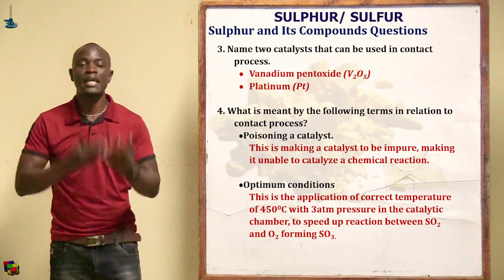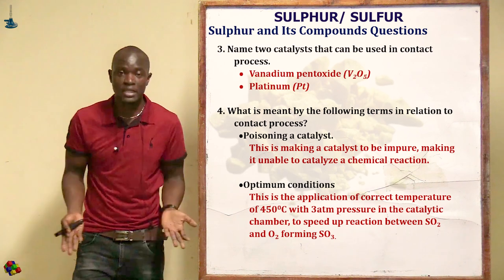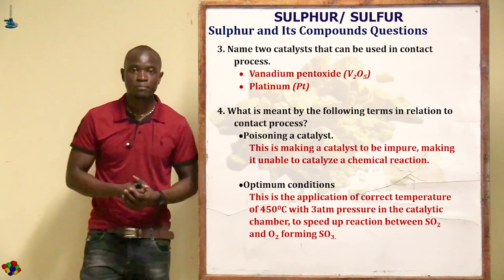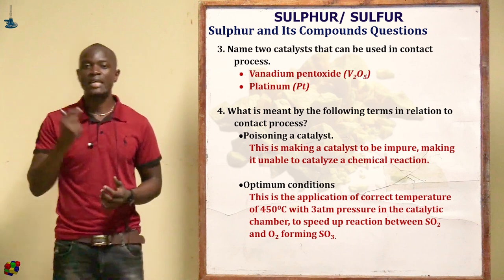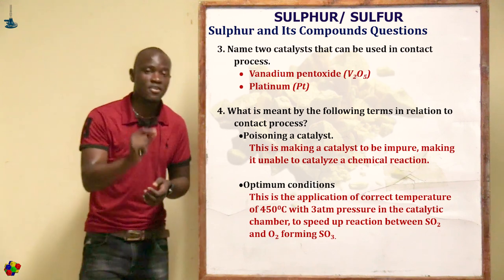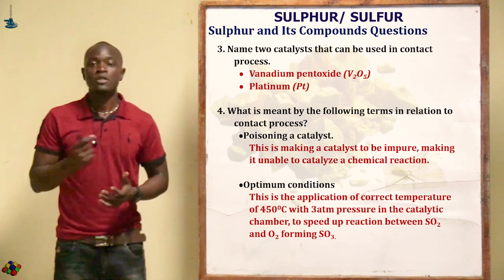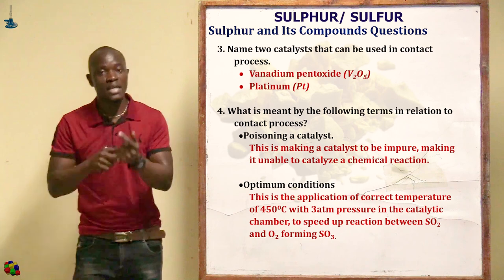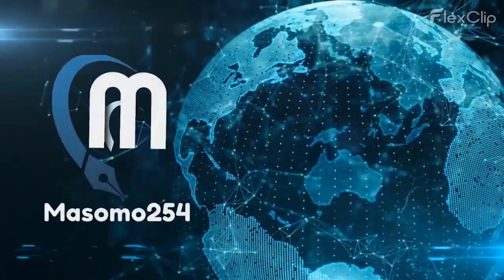The question asks about terms in the contact process. Poisoning the catalyst means making the catalyst unable to catalyze or speed up the rate of chemical reaction due to impurities. The optimum condition refers to the application of 450°C at three atmospheres in the catalytic chamber, for the reaction between SO₂ and oxygen in the presence of a catalyst to form SO₃.